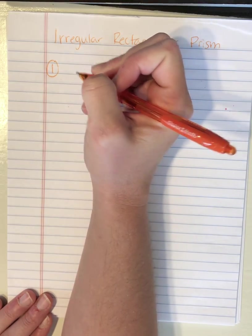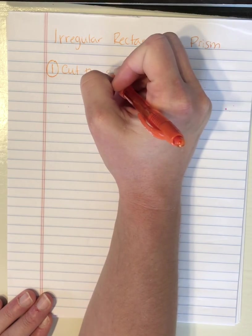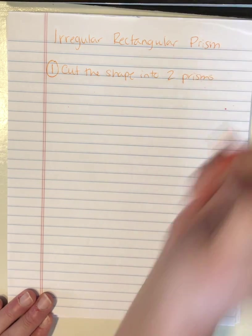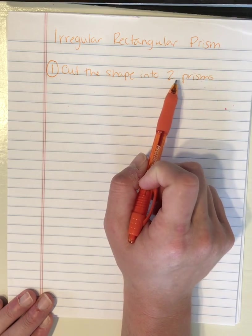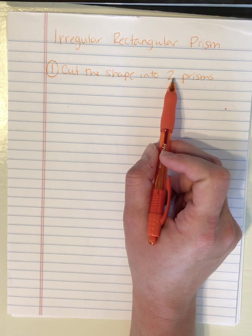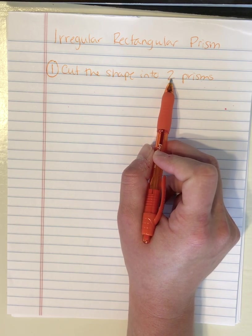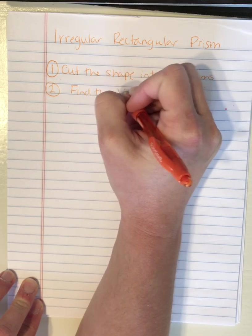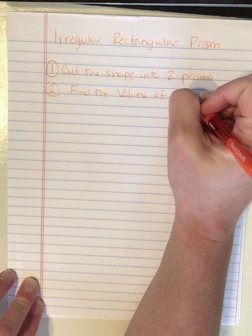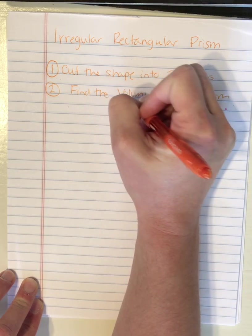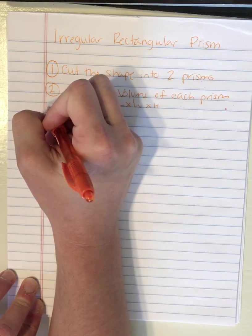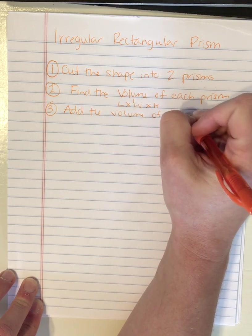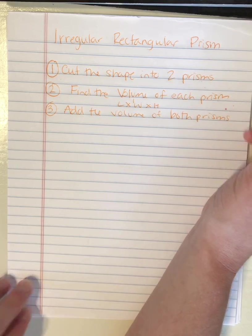Step one is to cut the shape into two prisms. In yesterday's module, if you read it carefully, you know that some irregular rectangular prisms can be cut into three or four prisms, but for now we're just going to focus on irregular prisms that can be cut into two rectangular prisms. Step two is to find the volume of each prism, and remember volume is length times width times height, and then step three is to add the volume of both prisms and your total is your answer.